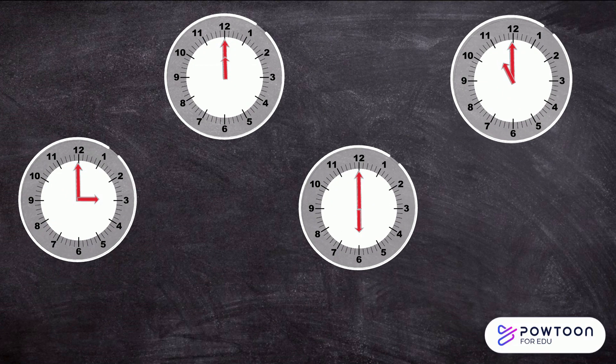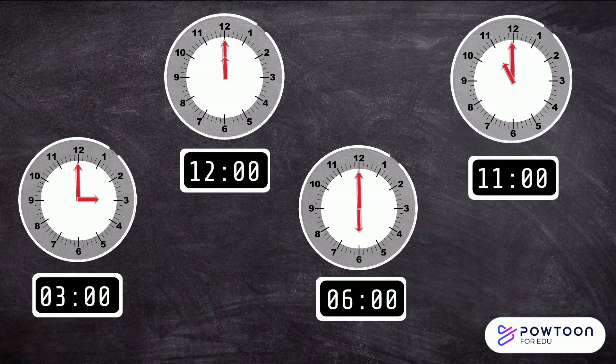Below is how these times appear on a digital clock. Three o'clock. Twelve o'clock. Six o'clock. And eleven o'clock.